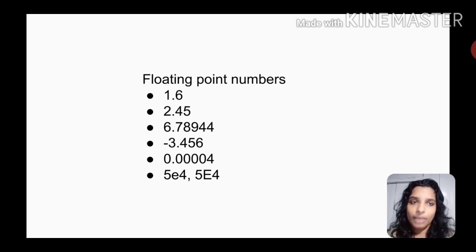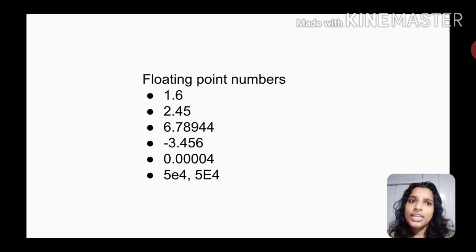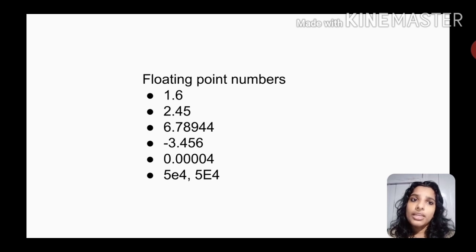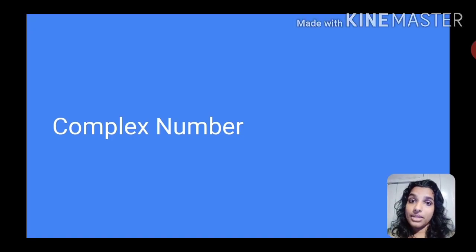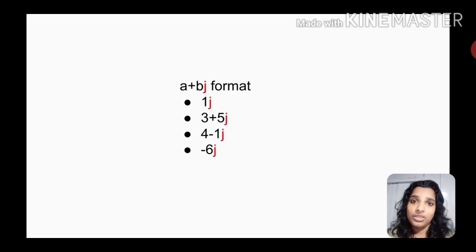We can talk about the data type. We have a negative number — for example, 5e raised to 4, that is 5 times 10 raised to 4, the answer in exponent range. You can write it with capital E. The complex number is in A plus BJ format. Examples: 1j, 3 plus 5j, 4 minus 1j, 1 minus 6j.